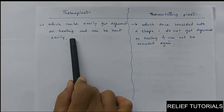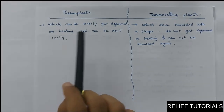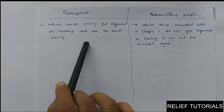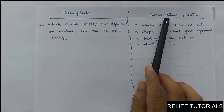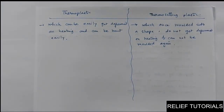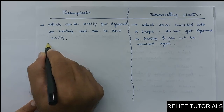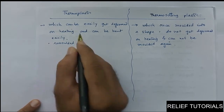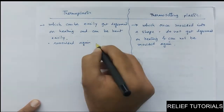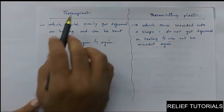Thermoplastics are plastics which can easily get soft on heating, can easily get deformed on heating, and can be remolded again and again repeatedly. But thermosetting plastics — 'setting' means they already set themselves in one particular shape and size — so they do not get deformed on heating and cannot be remolded again. Thermoplastics can be recycled and remolded repeatedly.